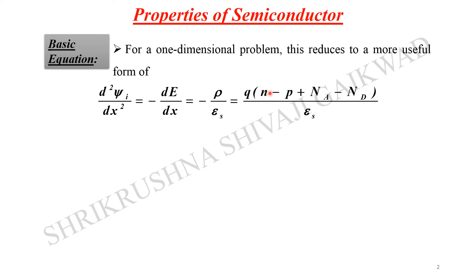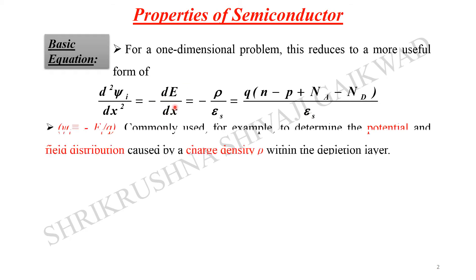The charge density rho depends on how much charge is present. Here n represents the electron charge density, and there is also the hole concentration. The difference accounts for the charge remaining after recombination of holes and electrons, plus the donor and acceptor concentrations present within the material — together giving the net charge density left over.